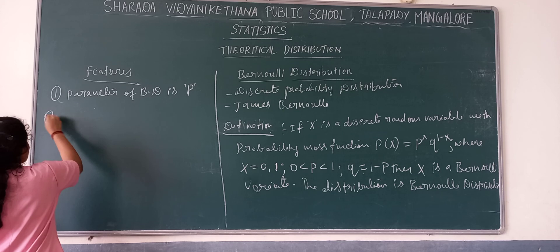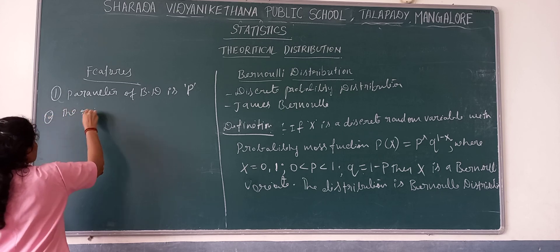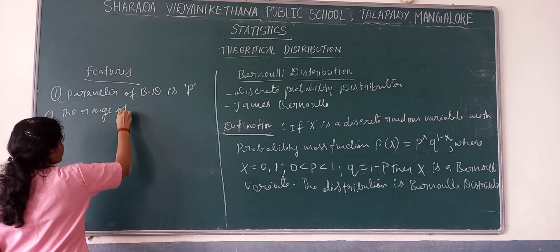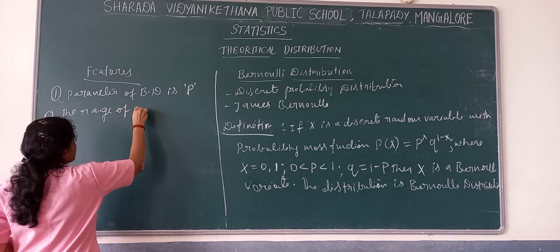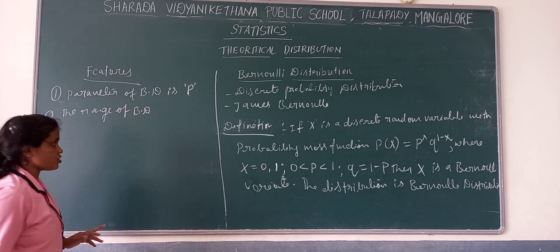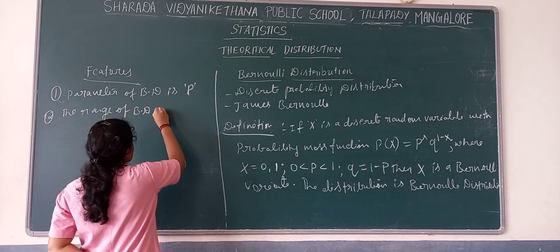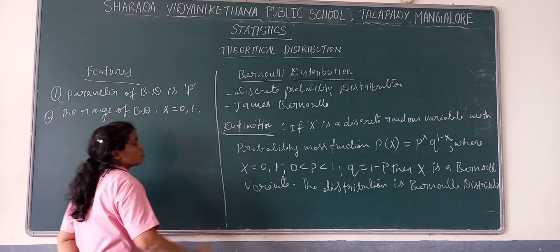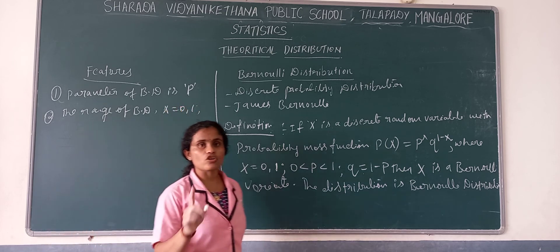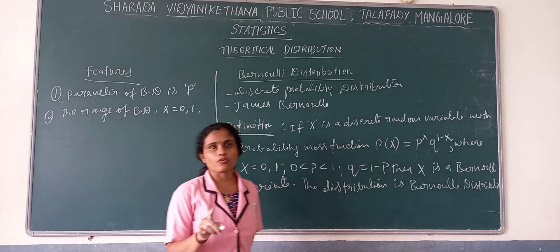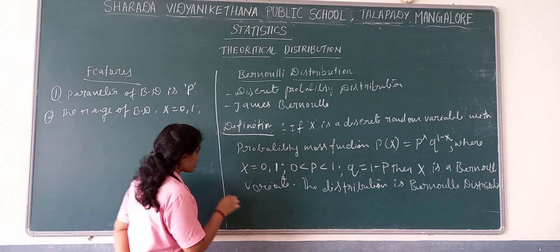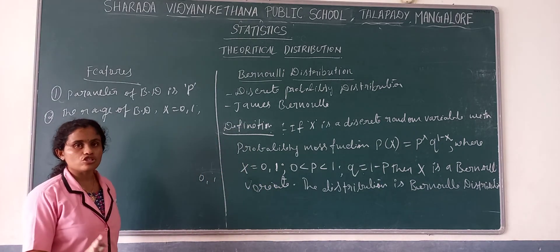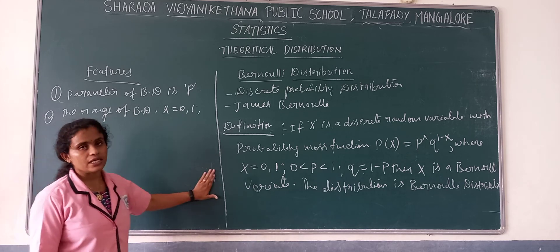The second feature is the range of Bernoulli distribution. The range is x = 0, 1. This is the range of Bernoulli distribution — only 0 and 1, not more than 1.